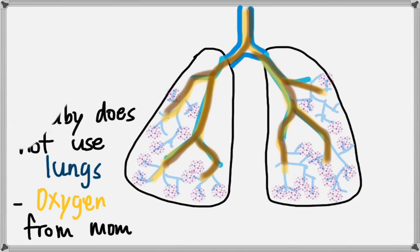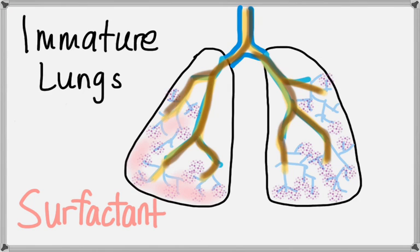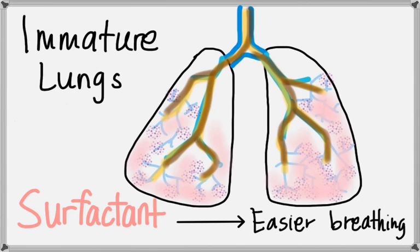So when a baby is born prematurely, the lungs are also immature. The baby has difficulty breathing shortly after birth. One reason is because the baby has not produced enough of a soap-like substance called surfactant. Surfactant makes it easier for the baby to breathe.